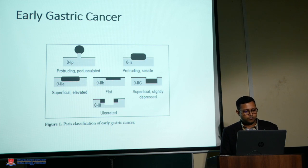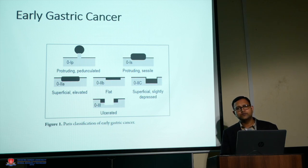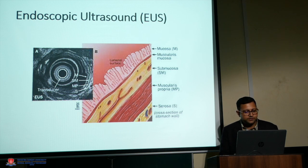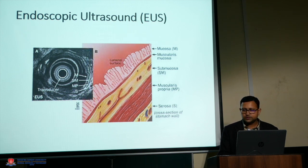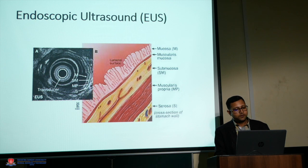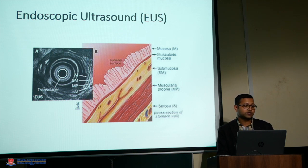The Paris classification looks at protruding pedunculated and sessile variants. The most common variant is the 2c variant, which is slightly depressed. It's important to diagnose early gastric cancer before lymph nodal spread has occurred, so we can go for endoscopic resection. Endoscopic ultrasound is the modality to understand the depth of invasion. EUS uses a transducer to visualize five layers of the stomach: mucosa, muscularis mucosae, submucosa, muscularis propria, and serosa.